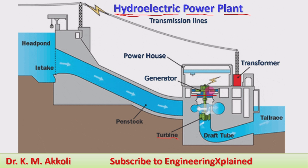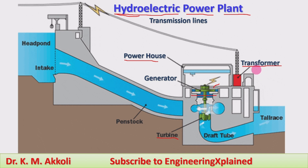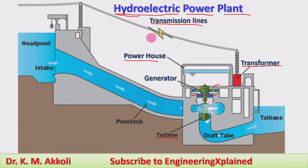The turbine and generator are housed in the powerhouse. The electricity generated is transmitted to a transformer where voltage and current are controlled — step-down and step-up transformers are used. Here, a step-down transformer is used to reduce the voltage, and then electricity is transmitted through transmission lines to wherever it is required.